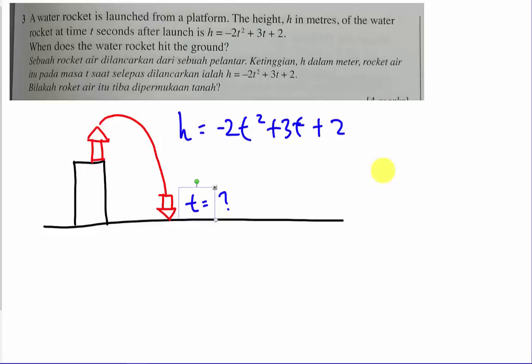Alright, so this question is quite easy but the keyword here is you have to understand what the meaning for hit the ground. Alright, hit the ground means what? So you just remember, okay, this one is a ground. So at the ground itself, at the ground itself, the height will always equal zero. Alright, this is something very important because at the ground there's no height.